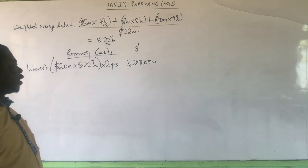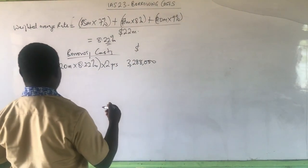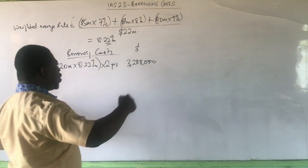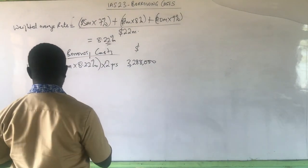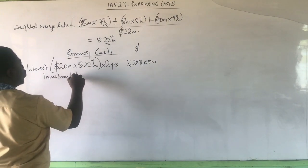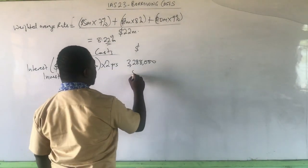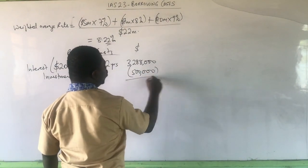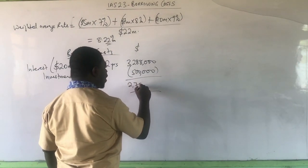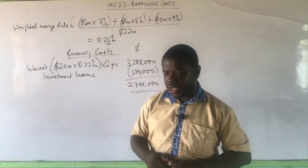This rate is per annum, which is why we multiplied by two — we are looking for borrowing costs for the entire period. We then reduce it by the investment income, because we are told we invested idle cash and the investment income yielded $500,000. We take that out, and our total borrowing cost becomes $2,788,000. That is the borrowing cost calculation.